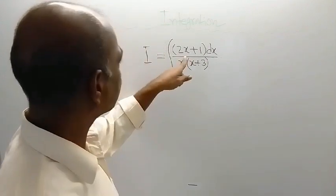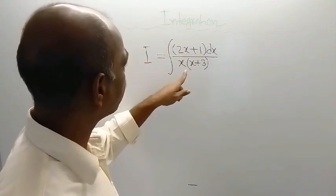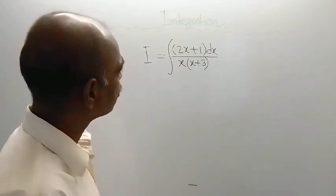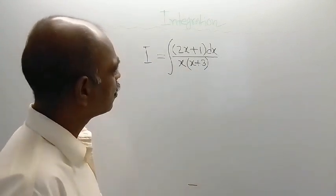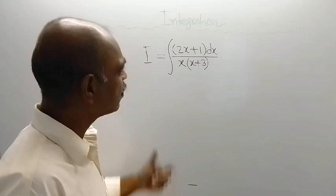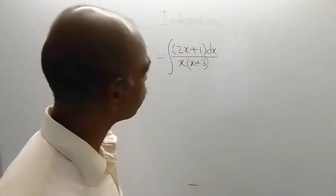So in the numerator, 2x plus 1 is there, and in the denominator, x into x plus 3 is there. This is totally an algebraic function.